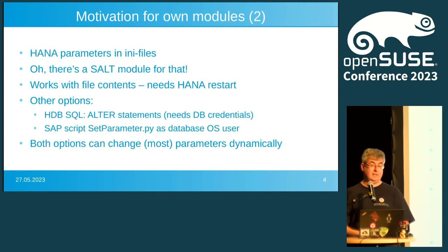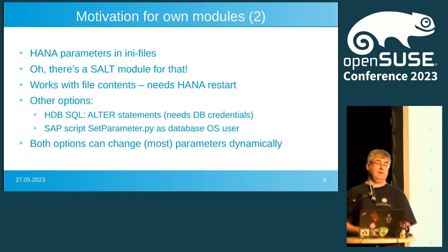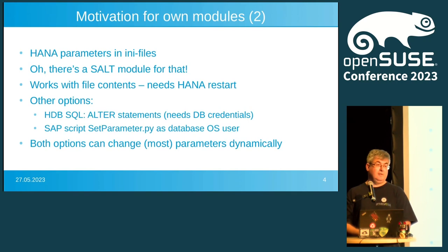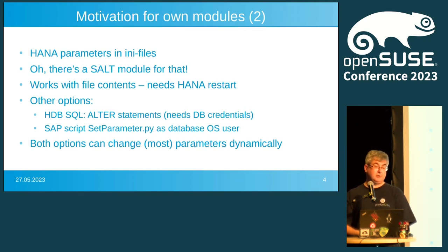HANA parameters are standard INI files with a section header and key-value store. There is a Salt module for that, but it works with the file contents — and that's bad for us because if I change the INI file I need to restart the HANA database, which means downtime for our customers. We have two other options: an SQL statement where you need database credentials, and a Python script provided by SAP that does exactly that. Both options can set most parameters dynamically, and that's what we use.